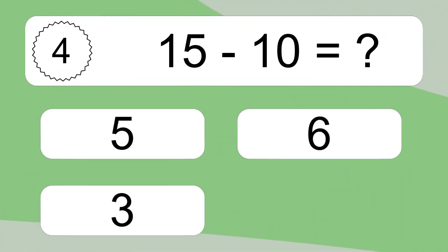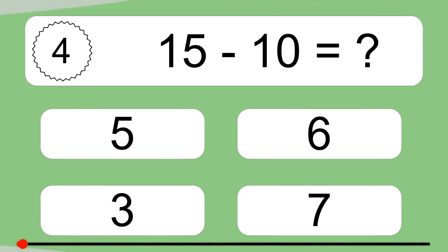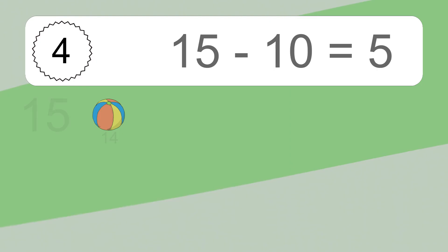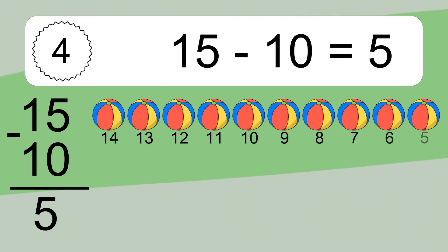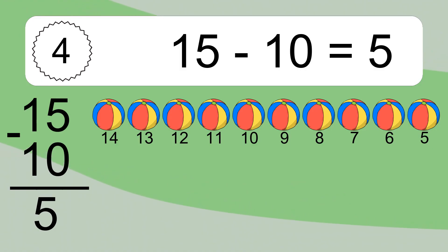15 minus 10 equals what? 15 minus 10 equals 5. Let's count it: 14, 13, 12, 11, 10, 9, 8, 7, 6, 5.